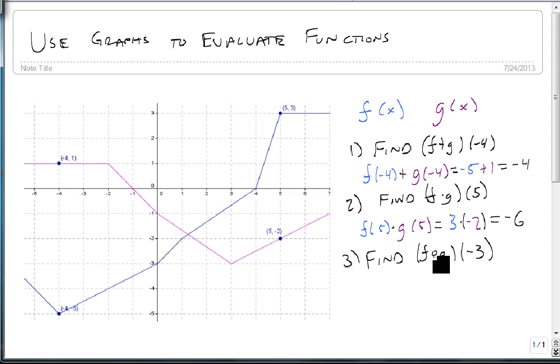Now, f composed with g of -3 works a little bit differently. We start, remember, at the back and plug our outputs into our inputs until we run out of functions. So this starts as f of g(-3).